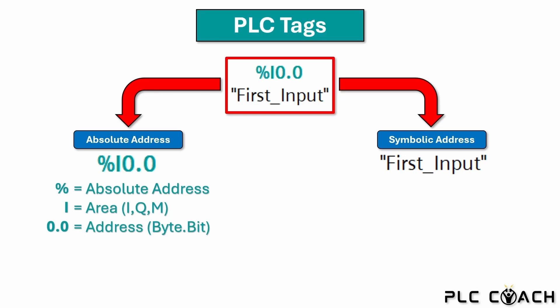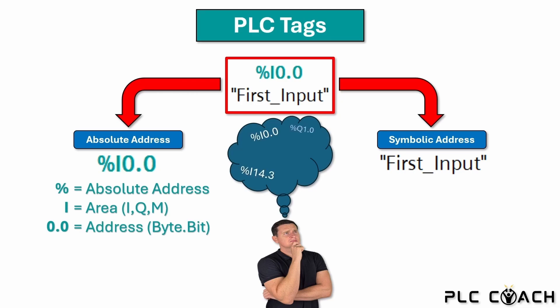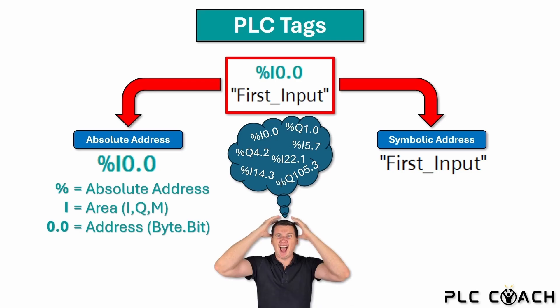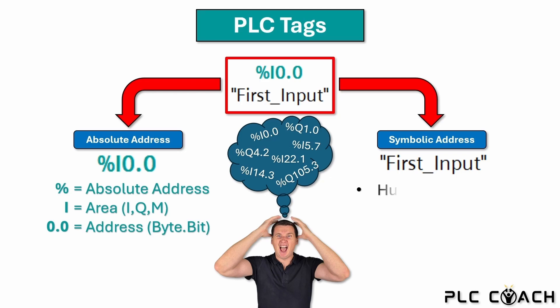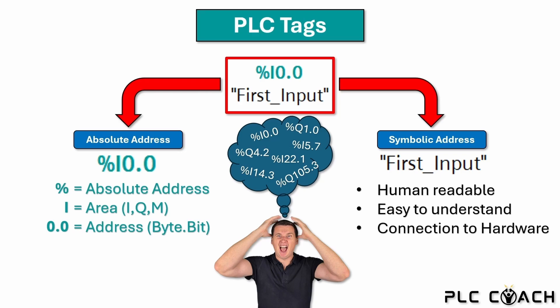To use a sensor or actuator in your PLC program, you will need to know its absolute address. But imagine working on a large PLC program with hundreds of absolute addresses — it's nearly impossible to remember which inputs and outputs are connected to specific sensors and actuators. For this reason, the TIA portal uses symbolic addresses instead. Symbolic addresses are defined by the programmer; they are easy to read and should be simple and clear to understand. The symbolic address serves as a bridge between the PLC program and the absolute address, which directly references the hardware.